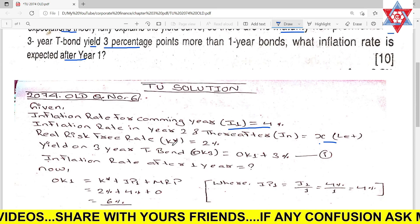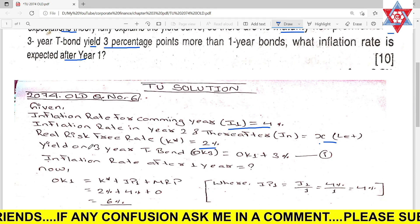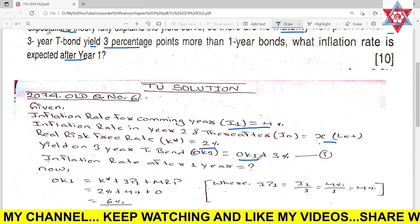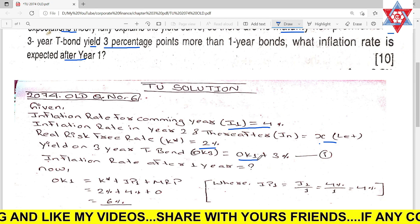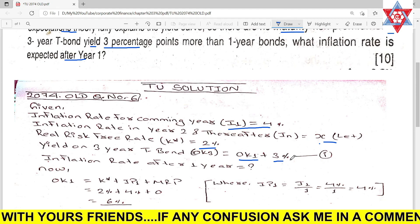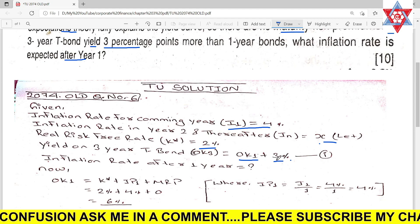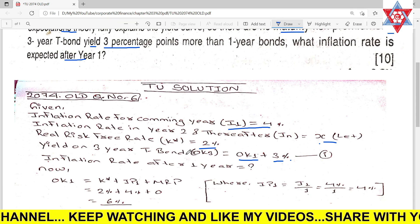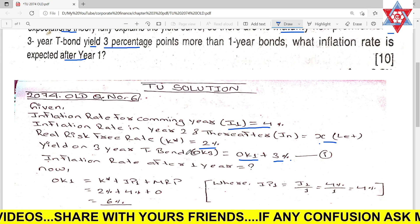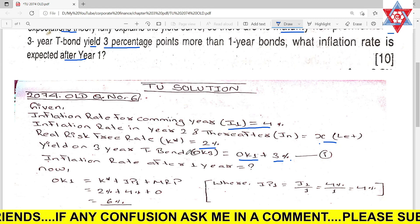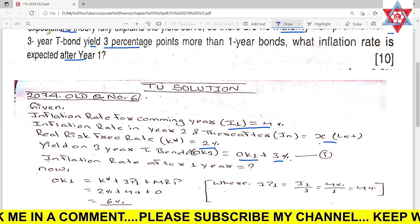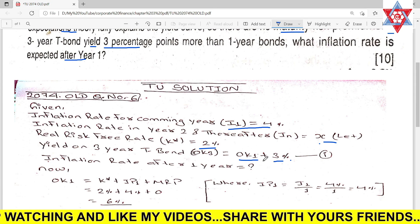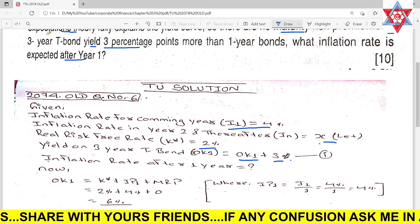Real risk free rate two percent. Yield on three year, zero K₃, is the interest rate on treasury bonds. K₁ is the yield on one year. The equation: zero K₁ plus three percent equals zero K₃.